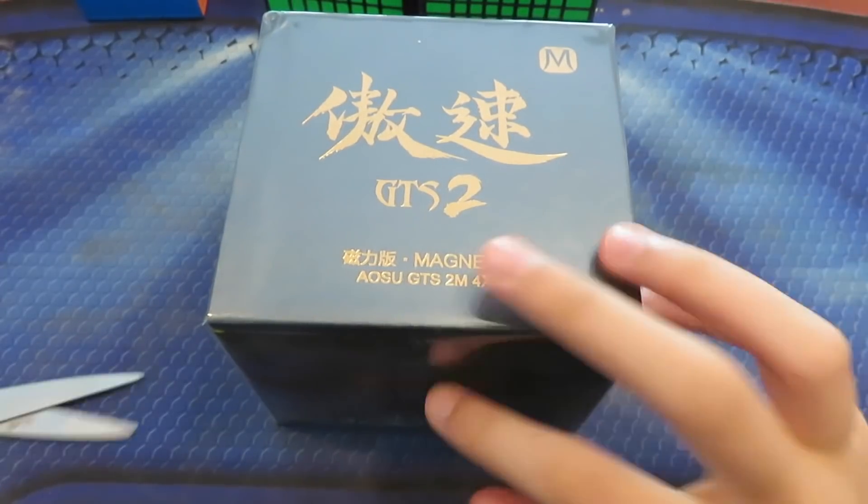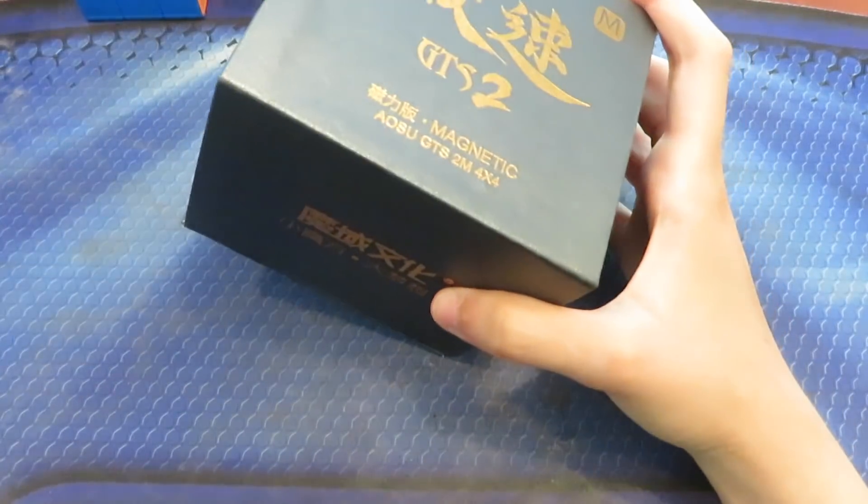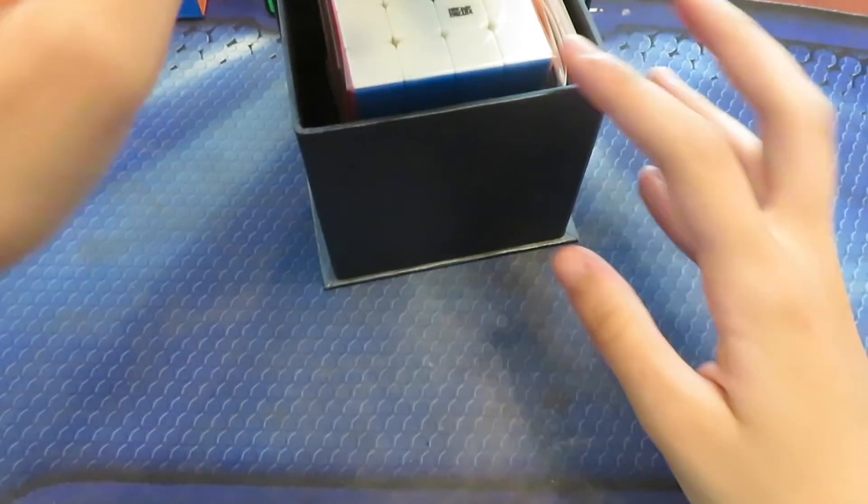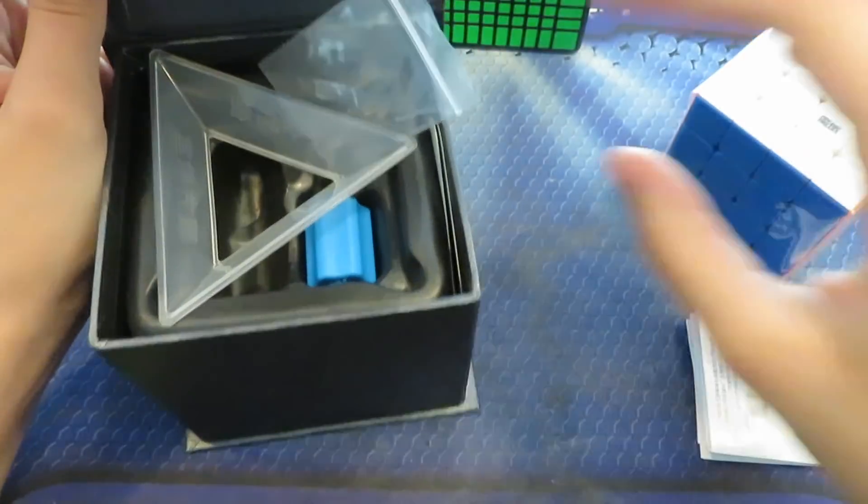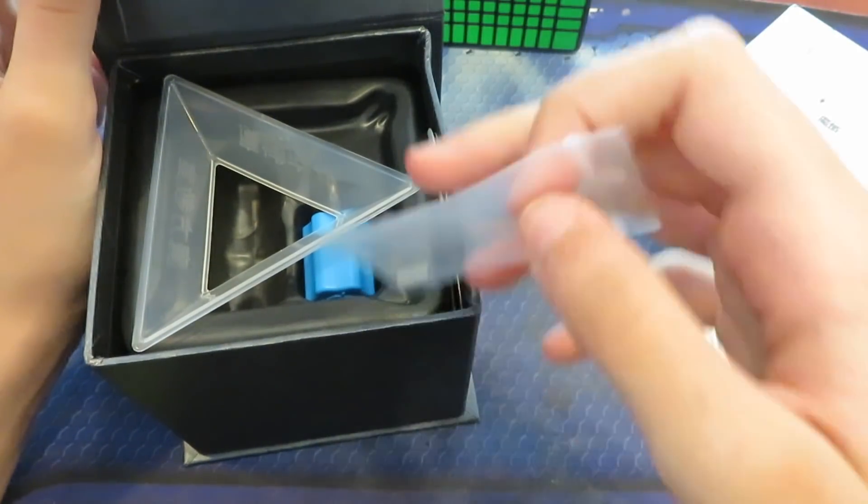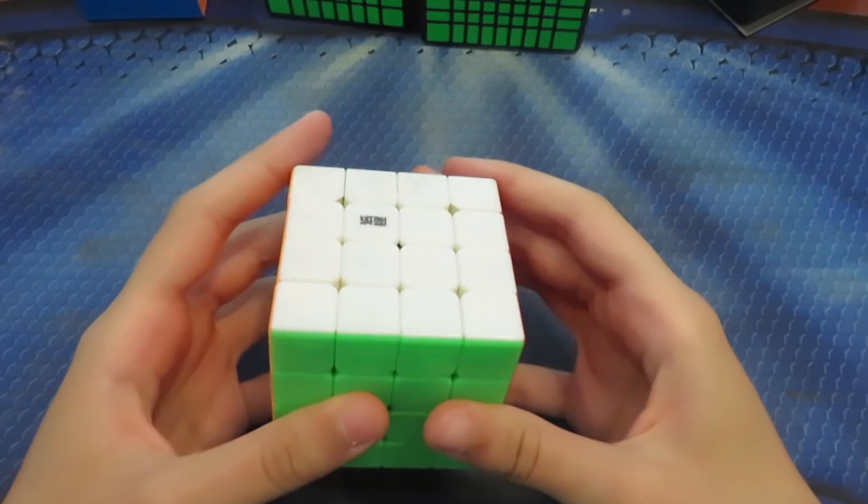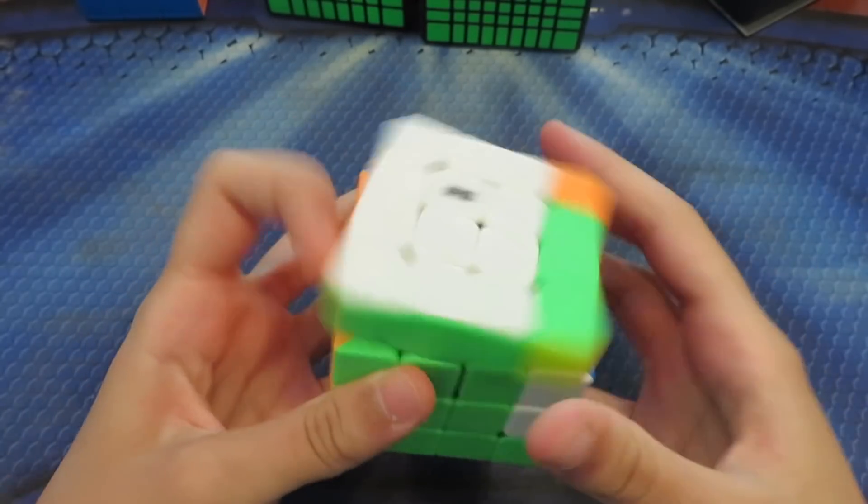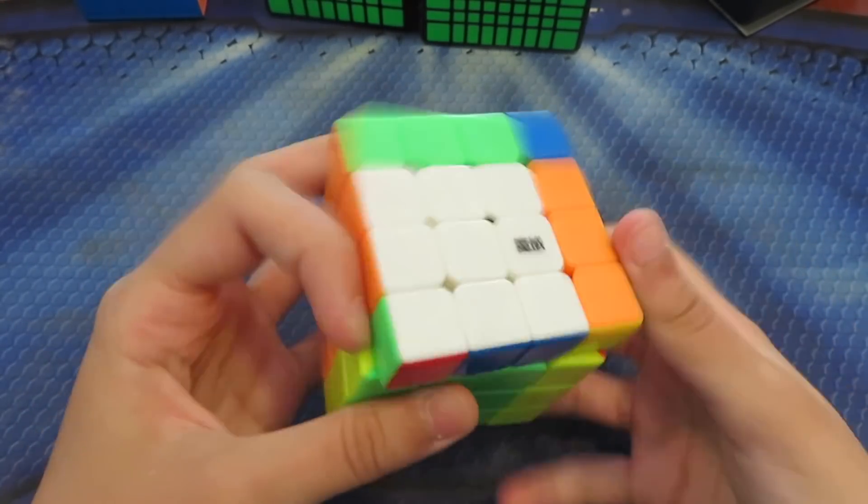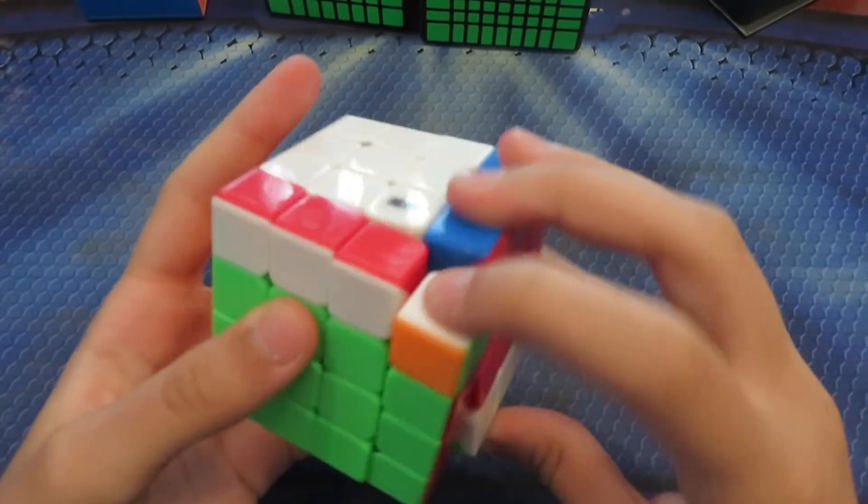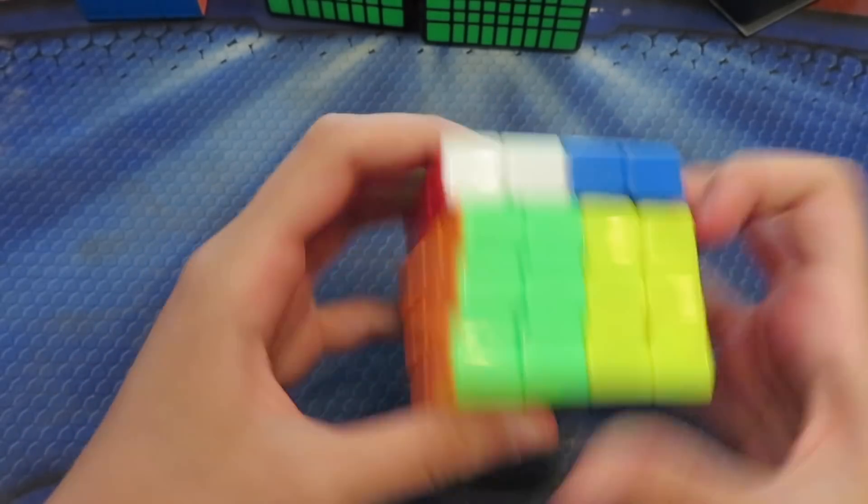This is what I'm most excited for, this is the Alsu GTS2M. I've been using the Alsu GTS recently, it's been really good. So super excited for this. Okay, alright, it comes with extra magnets. Alright, so I'm not really sure what's different about this cube, but it definitely feels a lot more stable. Yeah, really liking it out of the box.